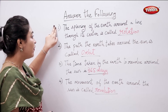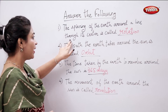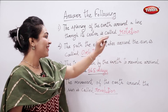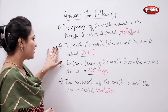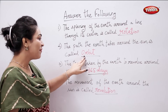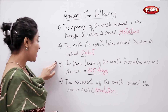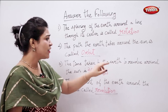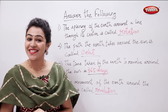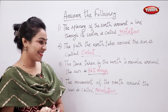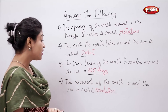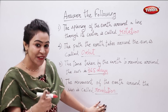The spinning of the earth around a line through its center is called rotation. The path the earth takes around the Sun is called orbit. The time taken by the earth to revolve around the Sun is approximately 365 days. The movement of the earth around the Sun is called revolution.